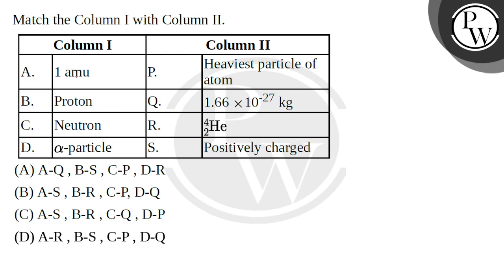Column first says 1 AMU. Now what does 1 AMU mean? If you look at column second, 1 AMU means 1.66 into 10 to the power minus 27 kg. That means this relationship between AMU and kg. So A matches with Q.